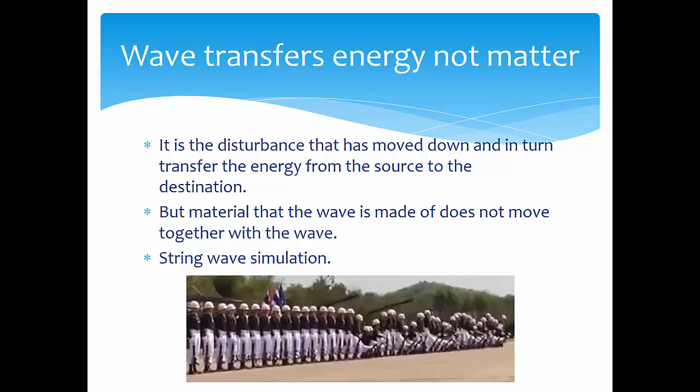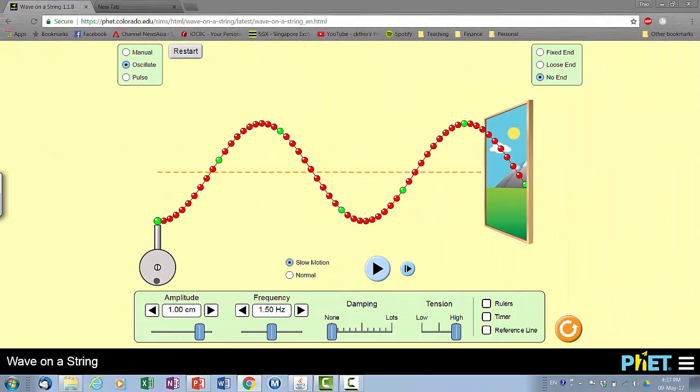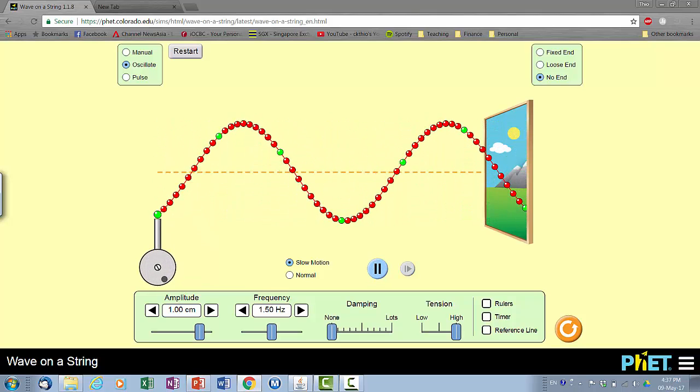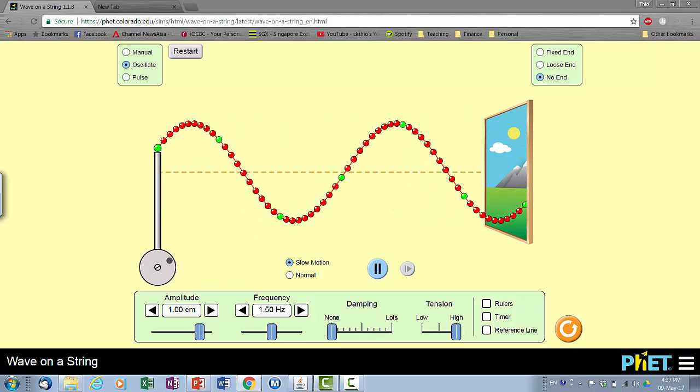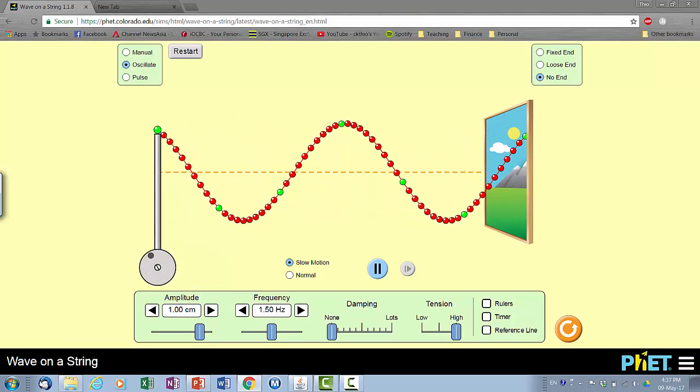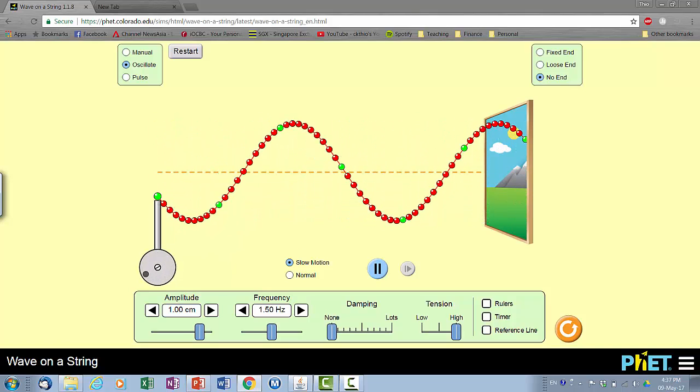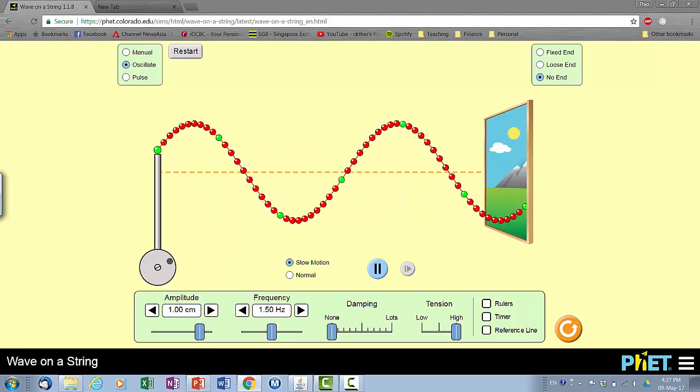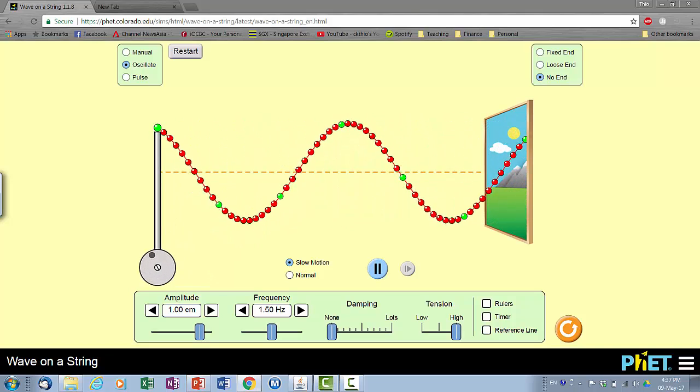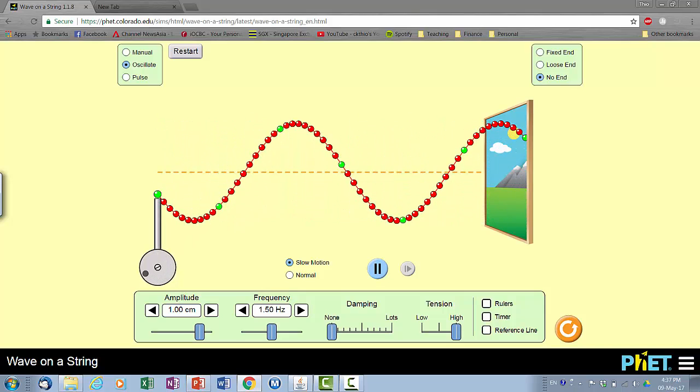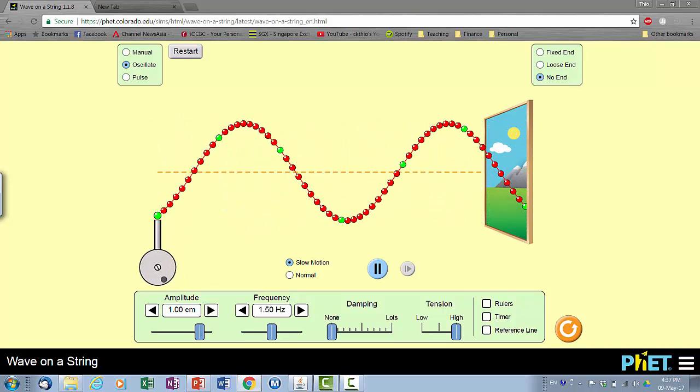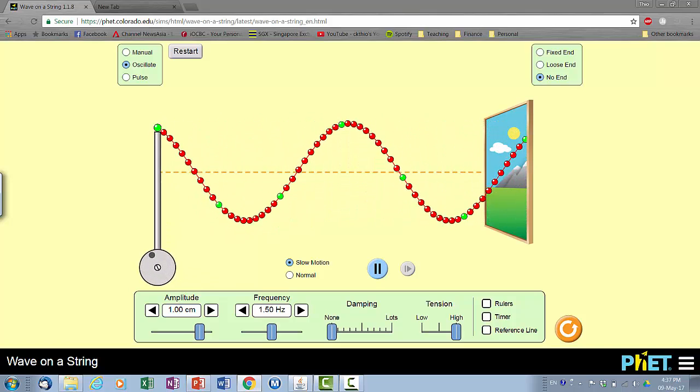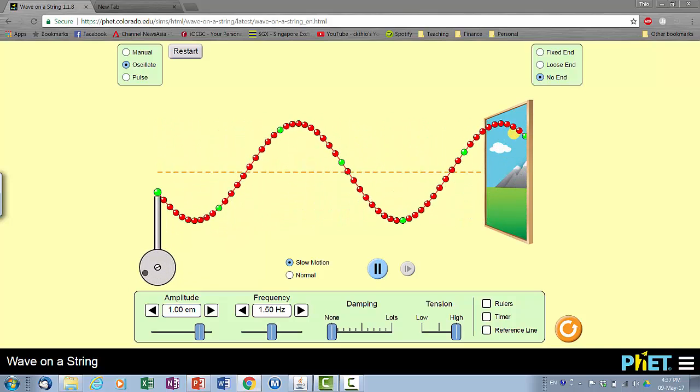Again, we'll use a simulation of a wave. This is a wave, and as you look at the wave, you notice that the green balls over here, even though there seems to be something that is moving across, if you observe the green balls, they are just only moving up and down. They actually do not move together with the wave. This is what is meant by waves transmit the disturbance down but don't transmit the matter down.